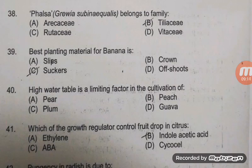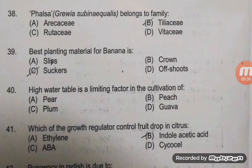High water table is a limiting factor for the culture of — the right answer is D — guava. The concept of limiting factor was proposed by Blackman in 1905. In the case of papaya, frost is a limiting factor; for date palm, rainfall is a limiting factor; and in kitchen garden, soil is a limiting factor.